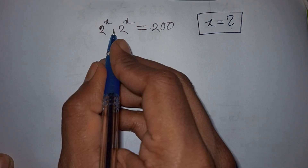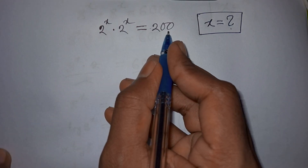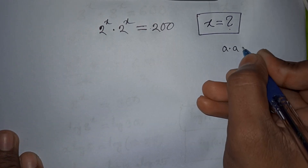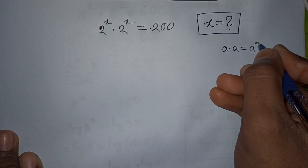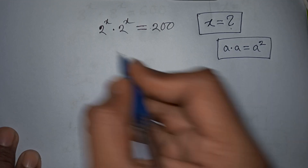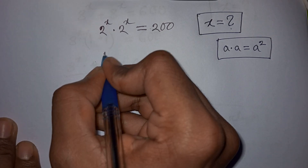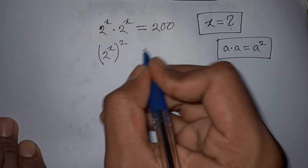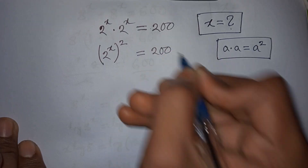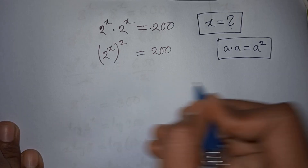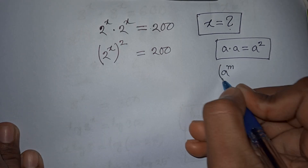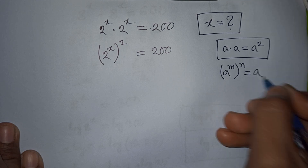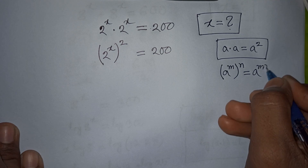How to solve 2^x times 2^x is equal to 200 — find the value of x. Here, in the form of a times a is equal to a squared, so this times this can be written as 2^x whole squared is equal to 200. Now we apply the exponential rule that a^m raised to the power n is equal to a^(m times n).